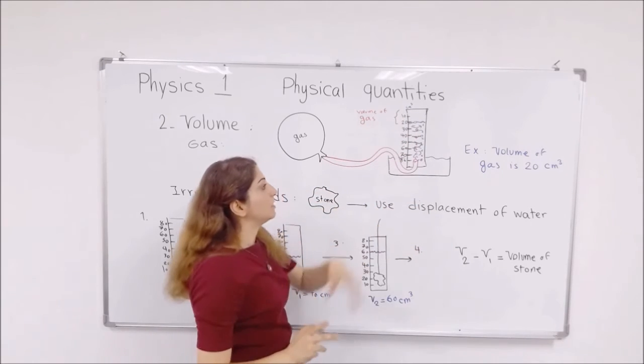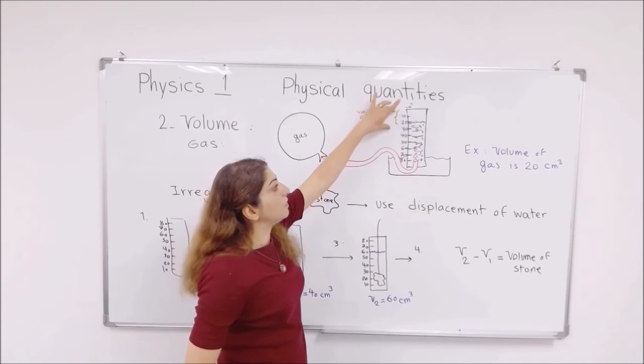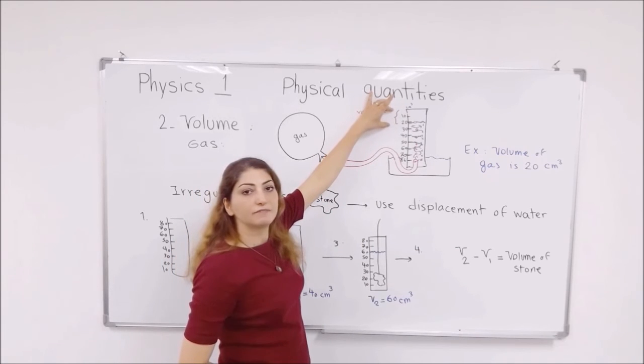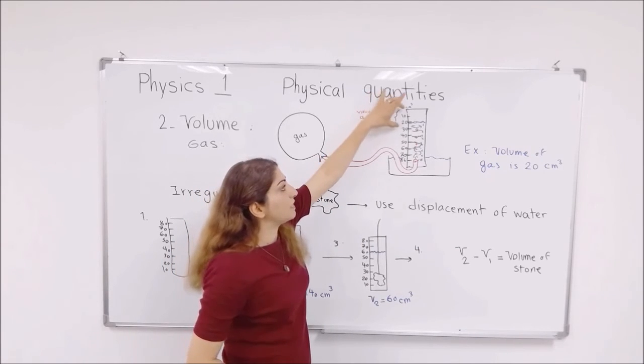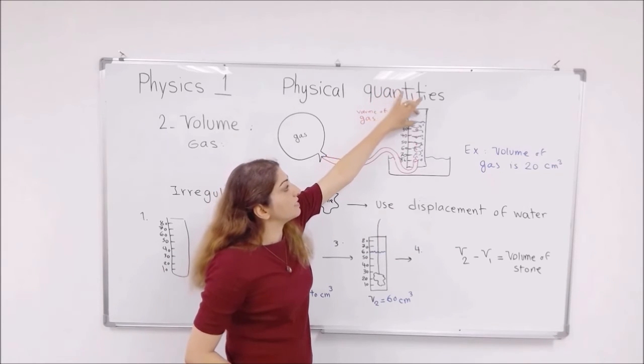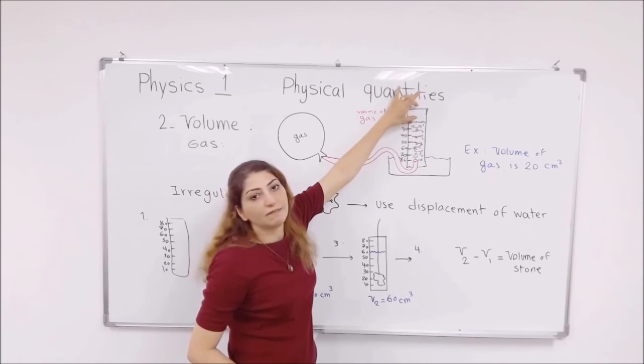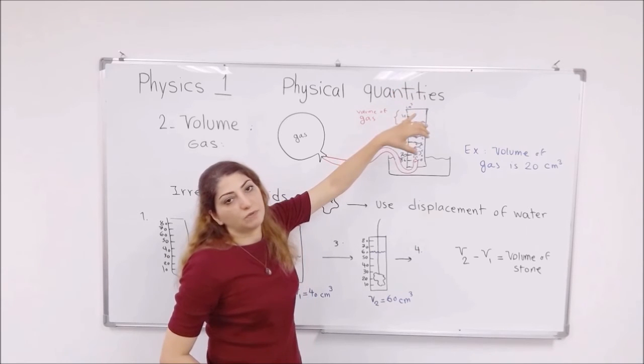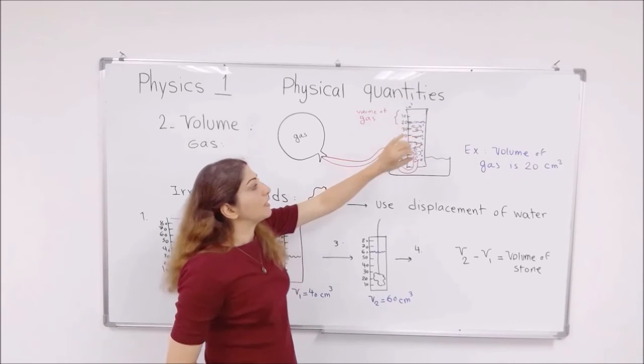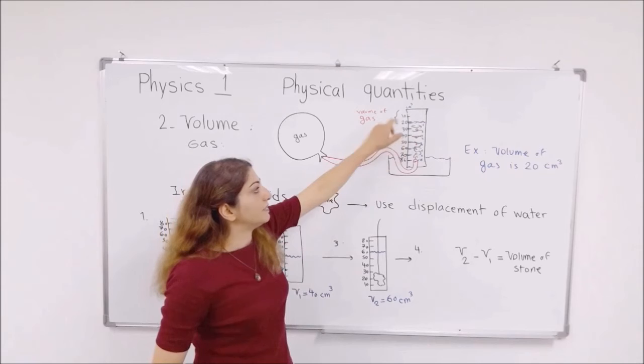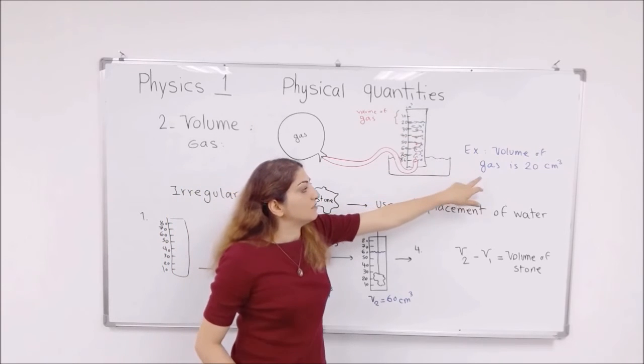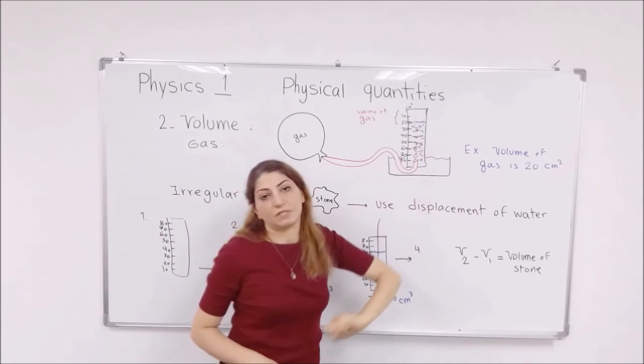So the volume of the gas can be read through the empty space here, so the empty space above the water level, whatever it is, would be the volume of the gas. For example, here, the volume of the gas would be 20 centimeter cube.